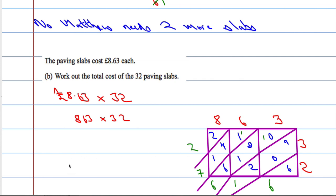So we get an answer of 2, 7, 6, 1, 6. But that was 863 times 32. My answer is going to be 100 times smaller, so I'm going to put a decimal place there. So that's the total cost of 32 paving slabs, £276.16.